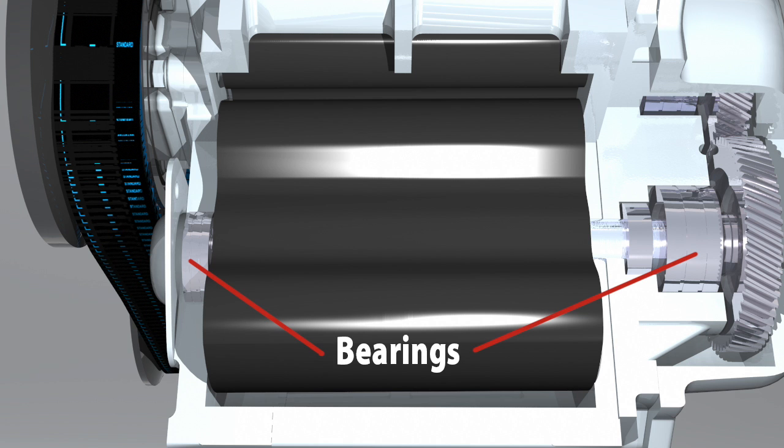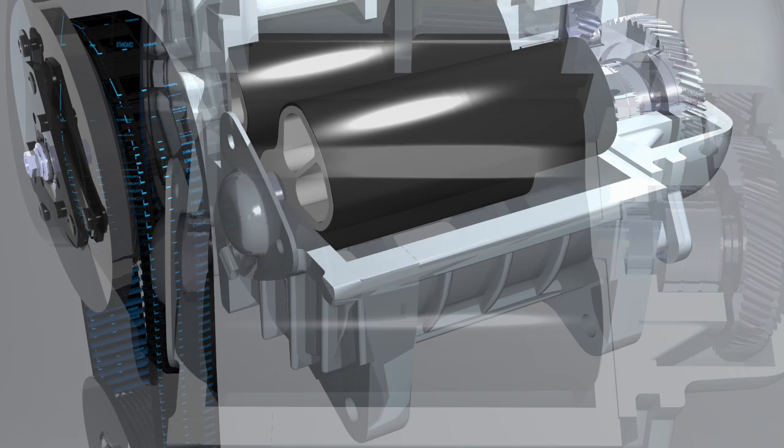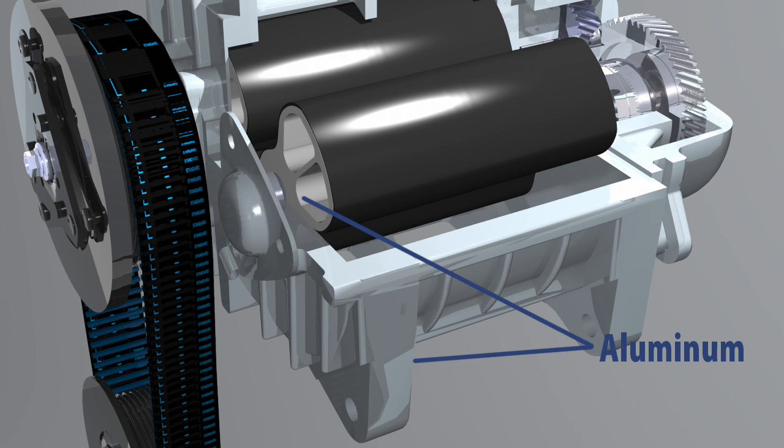Bearings support the rotor shaft on both ends. Since the rotors and housing are both made from aluminum, they can maintain efficiency even with thermal expansion changes.